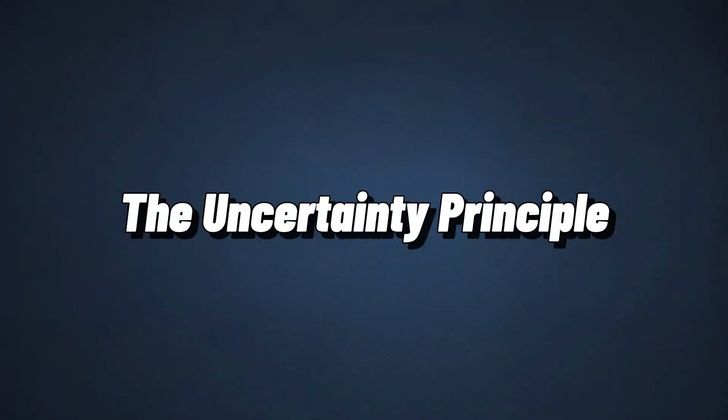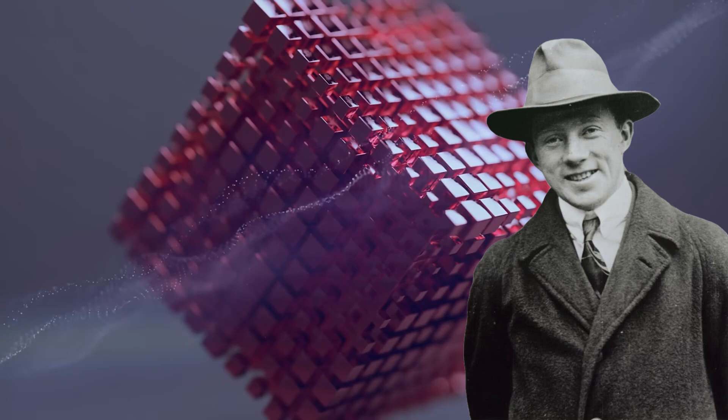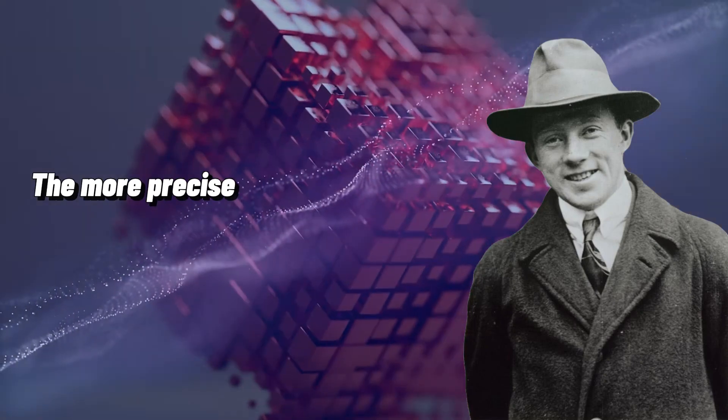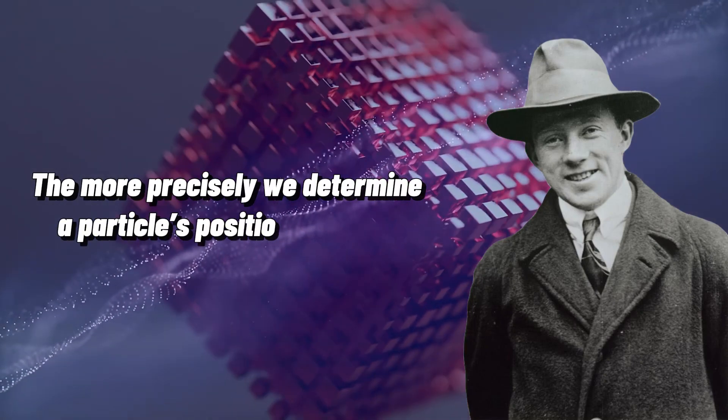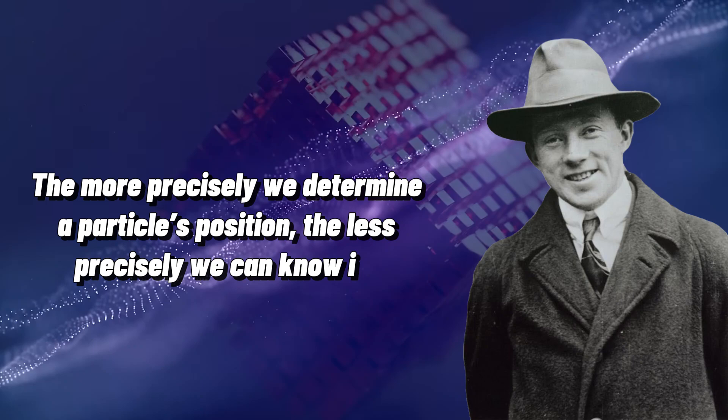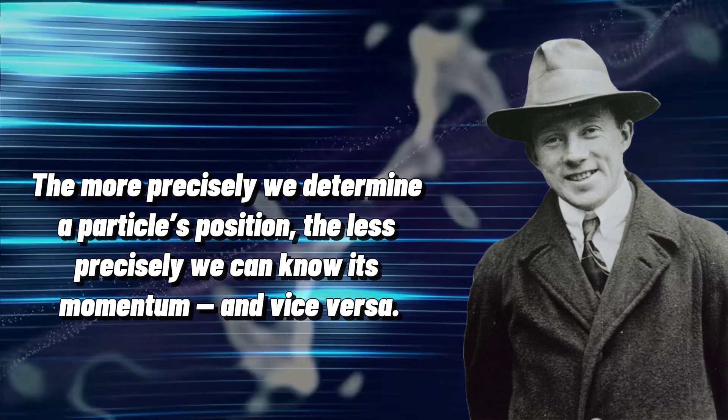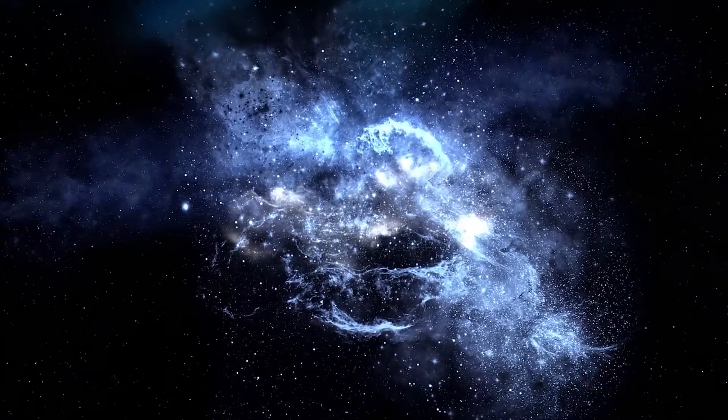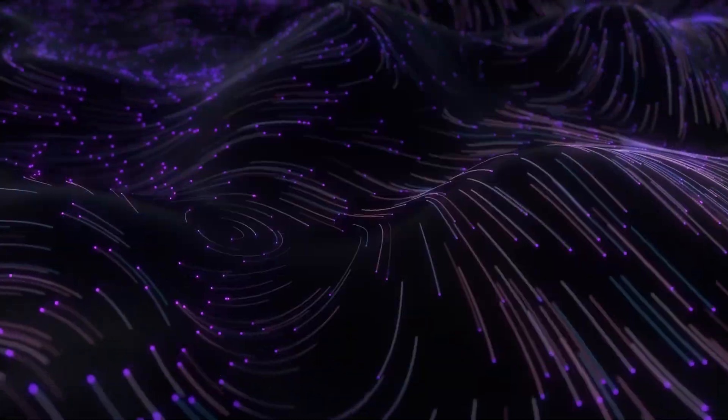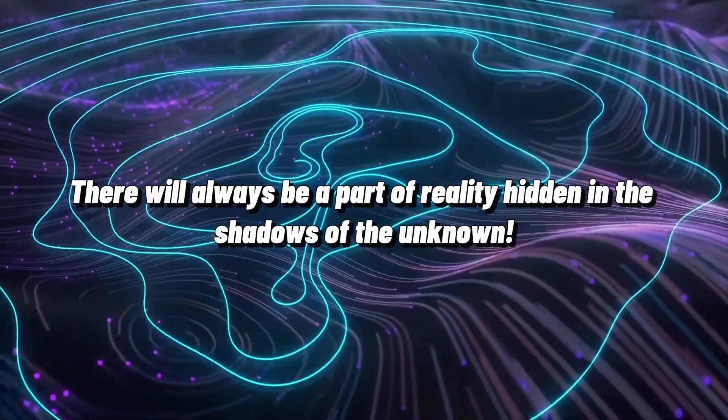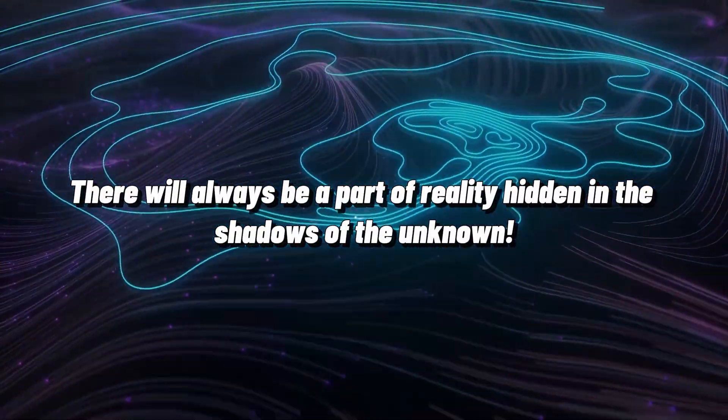In Heisenberg's own words, the more precisely we determine a particle's position, the less precisely we can know its momentum and vice versa. This is the uncertainty principle, a rule that tells us there will always be a part of reality hidden in the shadows of the unknown. And maybe even after centuries, it will never be fully uncovered.